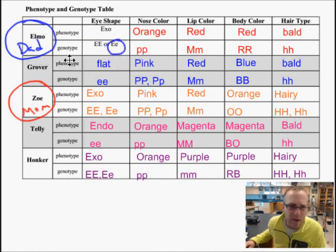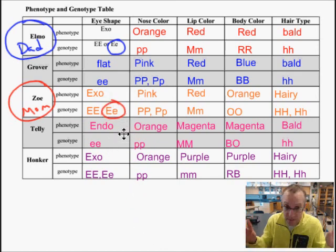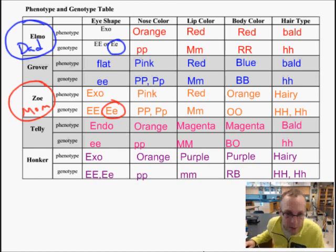So make your selections in each of these rows and I'm going to make some selections for Zoe here. I'm going to choose big E little e, the heterozygous one because I want to be surprised. I'm going to choose the big P little p genotype because, once again, I like to be surprised. And for hair type, I had some choices, we'll see what happens. I'm going to choose the heterozygous one.